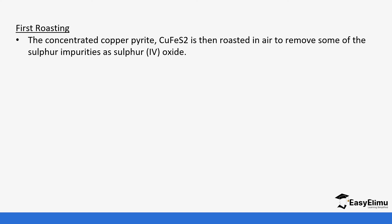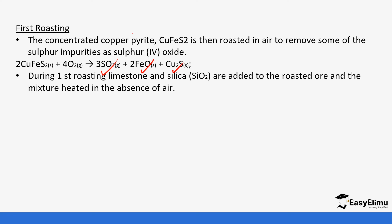Now let's look at the extraction. There is first roasting — the concentrated copper pyrite is roasted in air so that we end up removing some of the impurities like sulfur oxide. When copper pyrite is heated, we get copper sulfide, iron(II) oxide, and sulfur dioxide (SO₂). This is the first roasting.